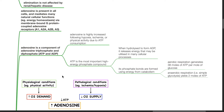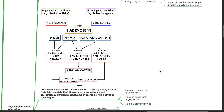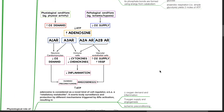ATP is the most important high-energy phosphate compound in the body. When hydrolyzed to form ADP, it releases energy that may be utilized in many cellular processes. Its phosphate bonds are formed using energy from catabolism. Aerobic respiration generates 38 moles of ATP per mole of glucose. Adenosine is considered a novel kind of cell regulator, also known as a retaliatory metabolite.